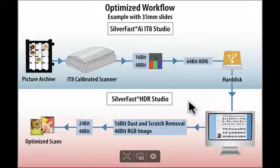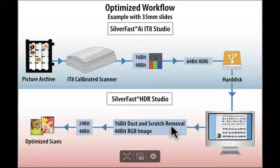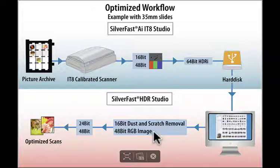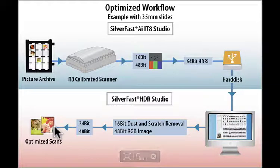Step 2 is to load the 64-bit HDRI file at any later time in Silverfast HDR and activate ISRD to remove dust and scratches, while using the full dynamic range from the 48-bit data to create a brilliant image. All of this can also be done fully automatically with the Silverfast Job Manager.